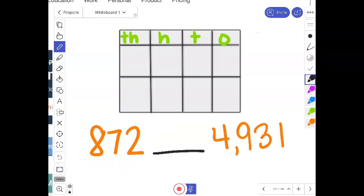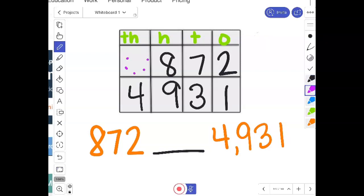Okay, let's do it again. So now I have 872, 4,931. This is another one of those no-brainers. That's a zero. There's nothing there. So it's less.